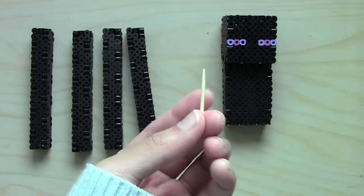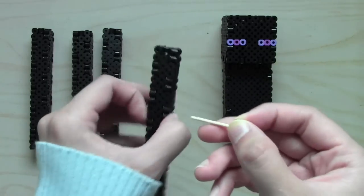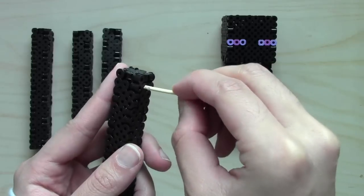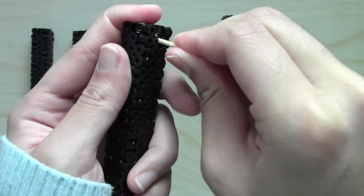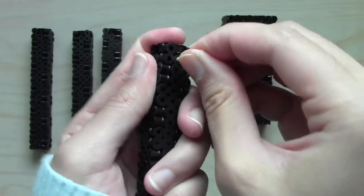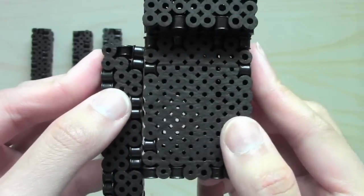For the arms and legs, I'm using these toothpicks that are cut in half so that they will fit and not get stuck with each other once they're in the body. Just poke it in.